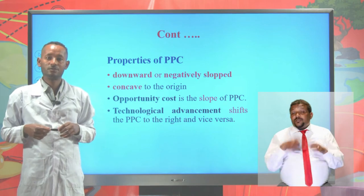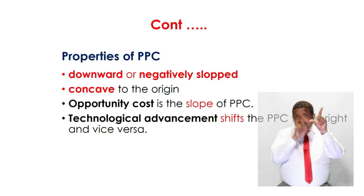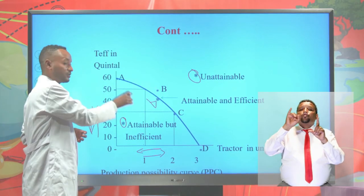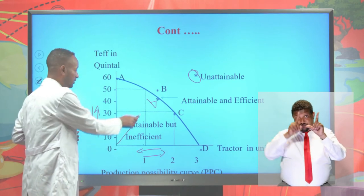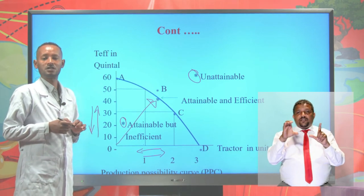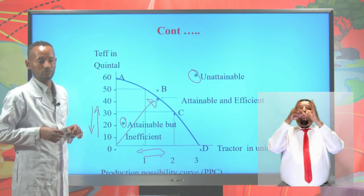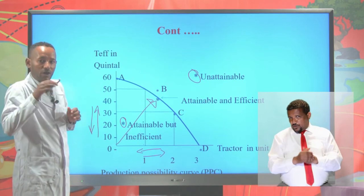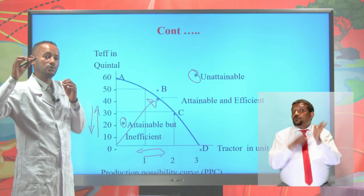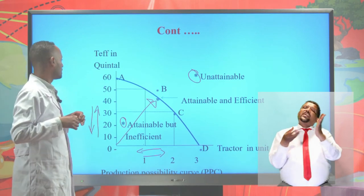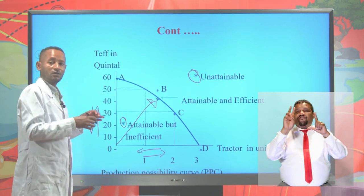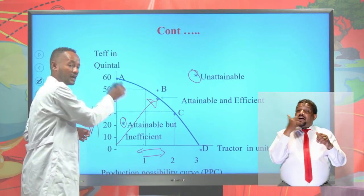Now let's see the properties of the production possibility curve. First, the PPC is concave to the origin. This is due to the law of increasing opportunity cost — as we produce more and more of a commodity, the opportunity cost always increases, causing the curve to be concave to the origin.